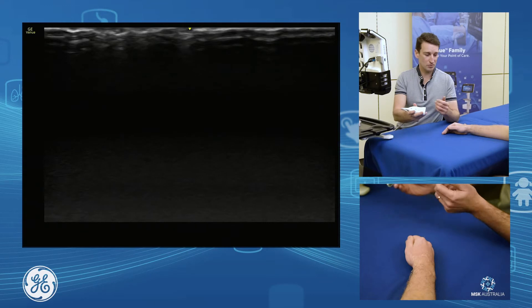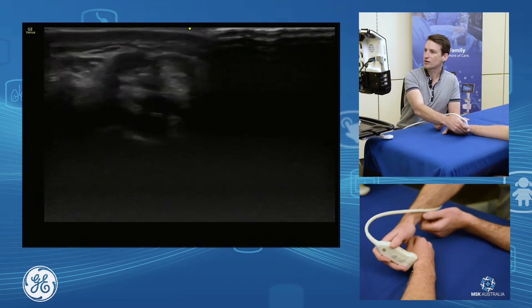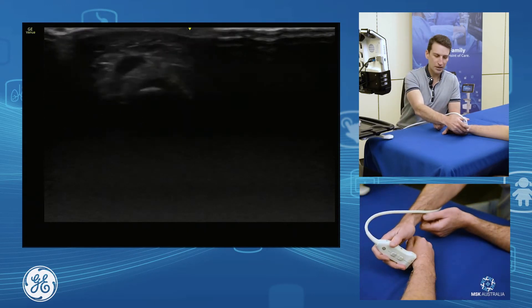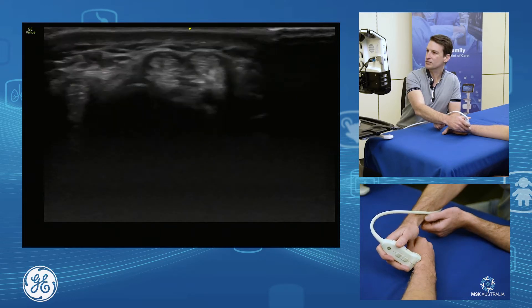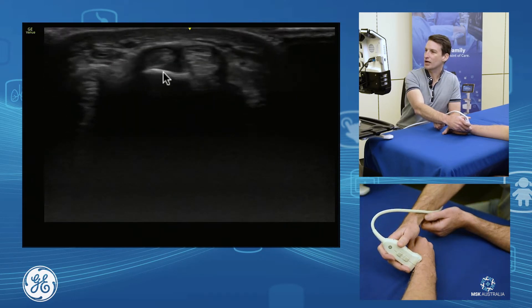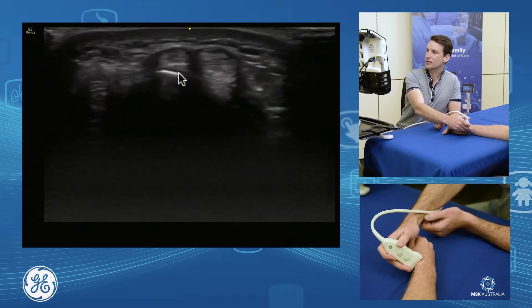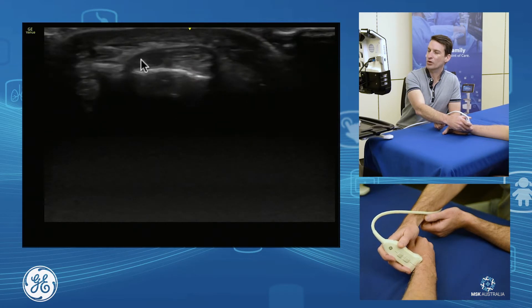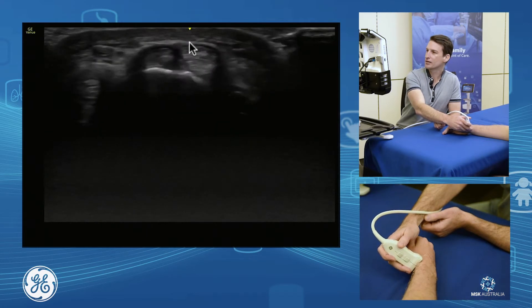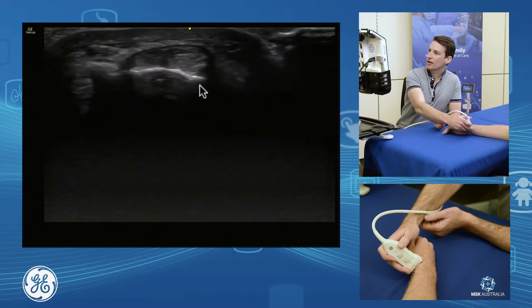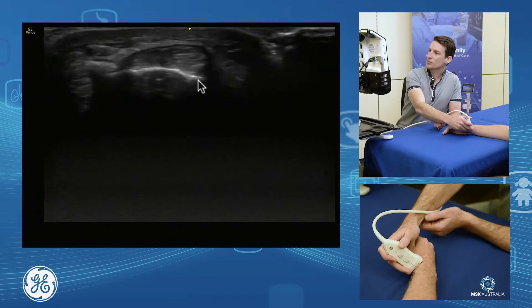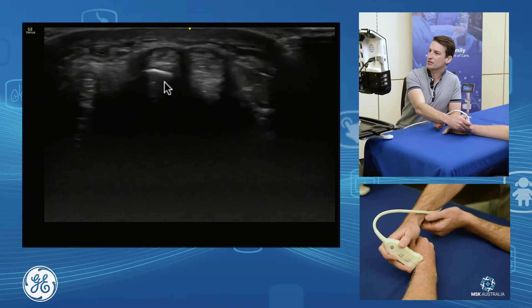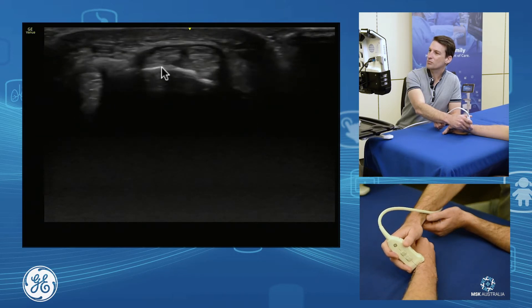We'll start with compartment one. On our radial aspect, coming from our lateral radius onto our styloid, we've got extensor compartment one being held down by our retinacula. We have abductor pollicis longus and extensor pollicis brevis.